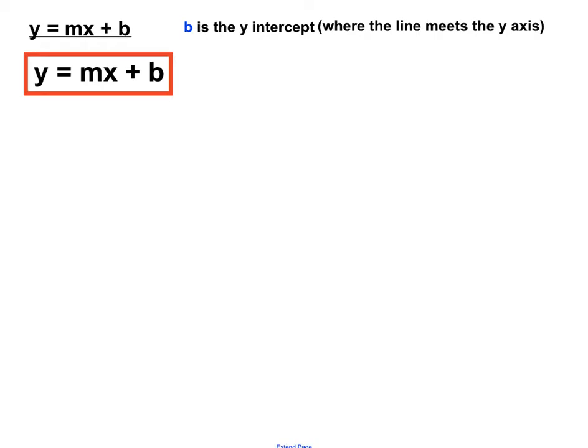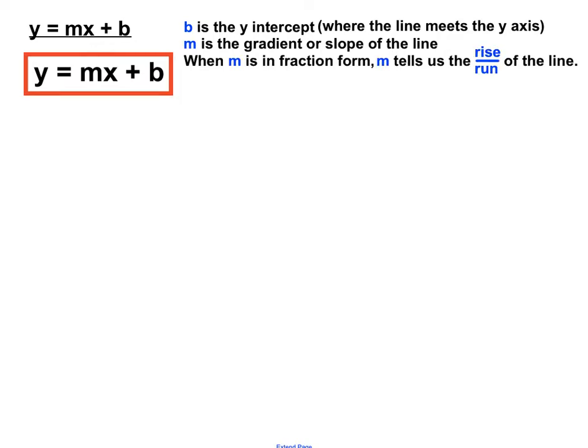So b we found is the y-intercept. That tells us where the line meets the y-axis. m, the number in front of the x, is talking about the gradient or the slope of the line, particularly when it's in fraction form.